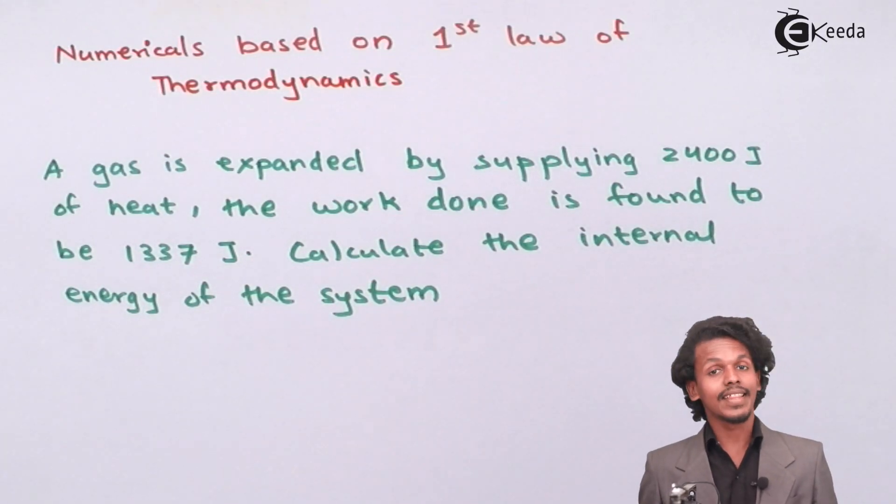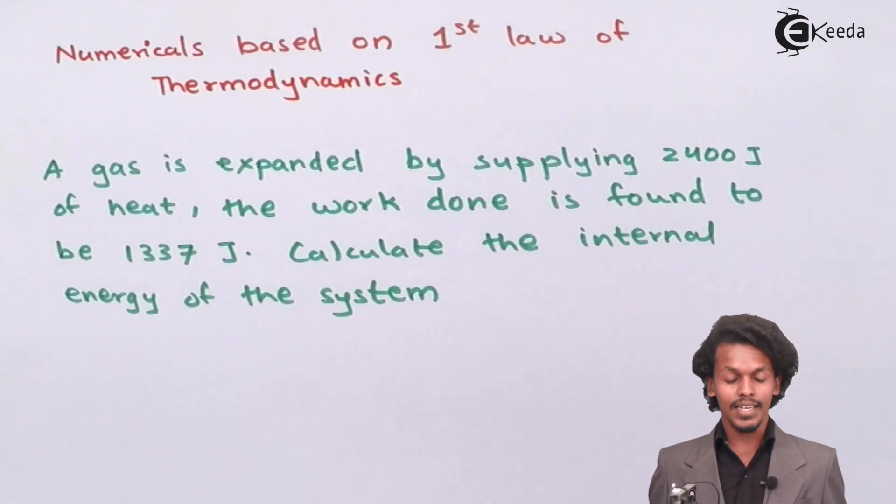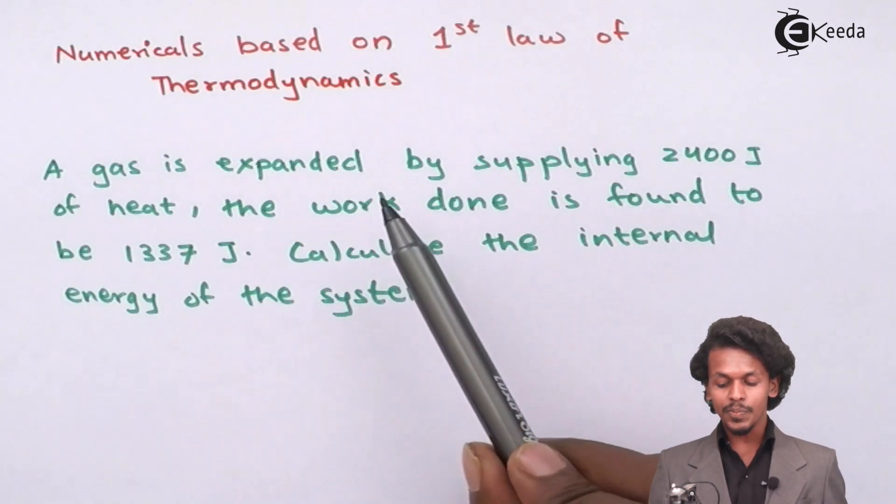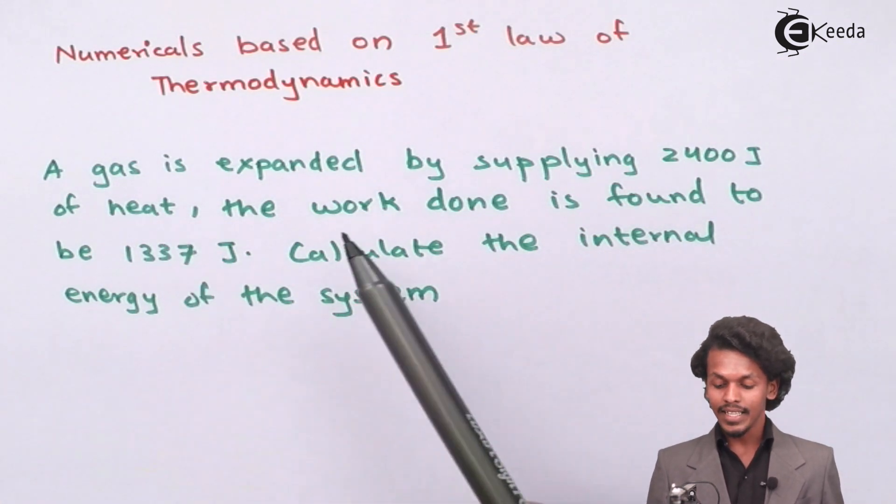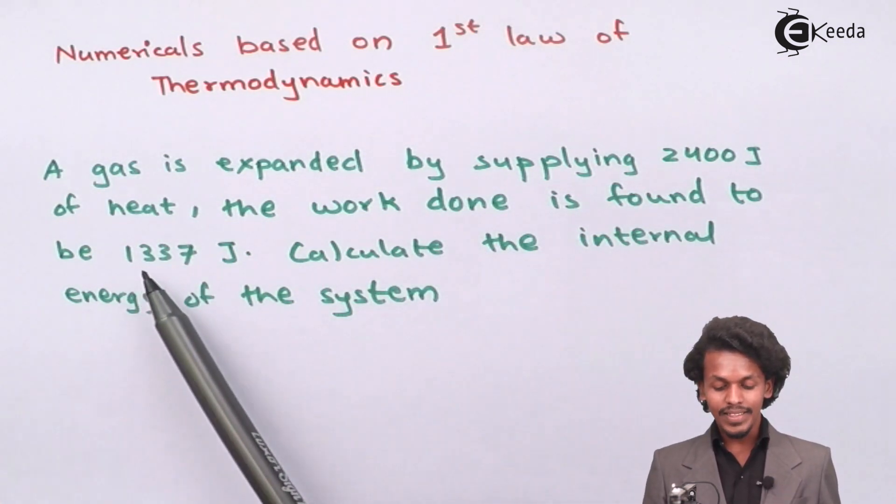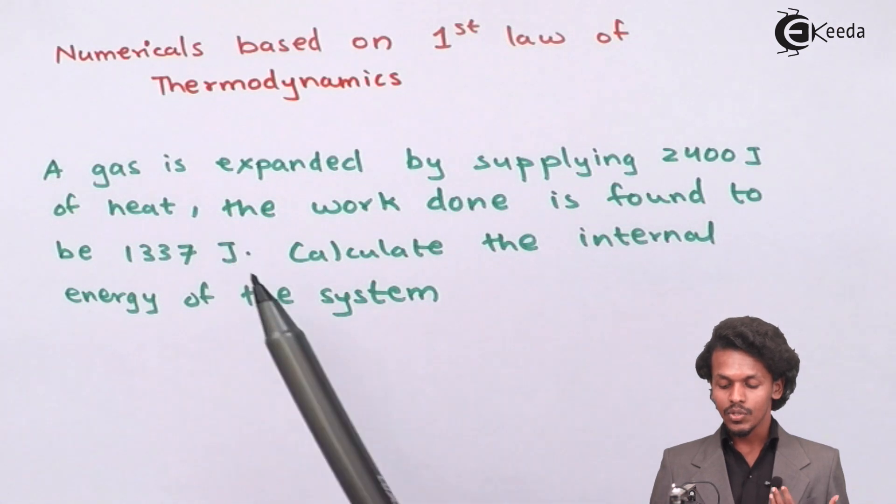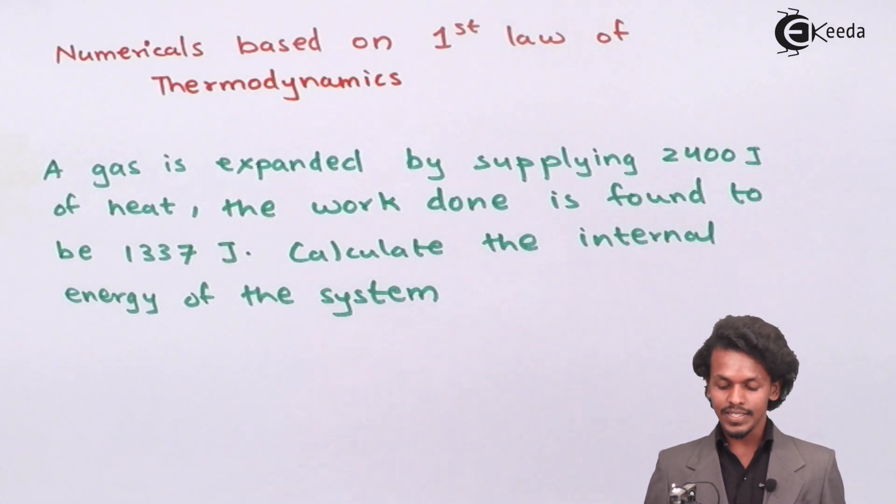This is the question given to us. A gas has been expanded by supplying 2400 joules of heat, and the work done is found to be 1337 joules. Calculate the internal energy of the system.